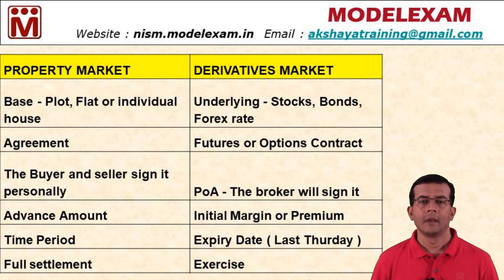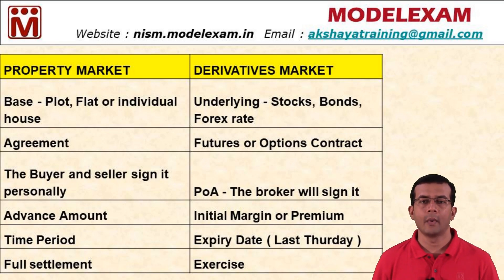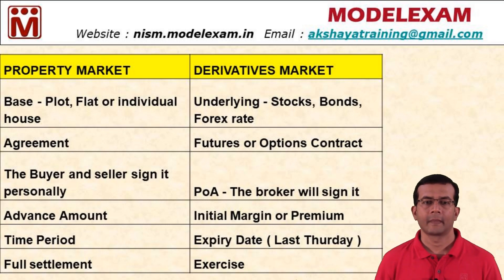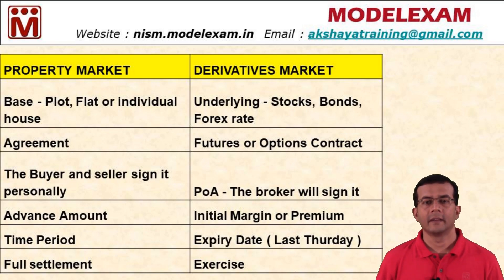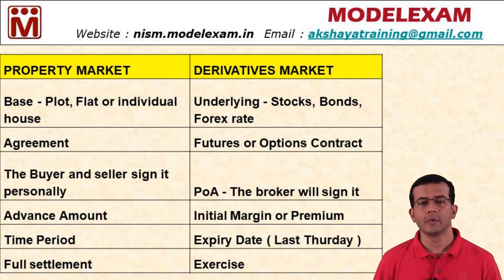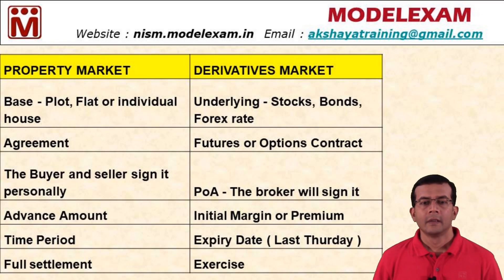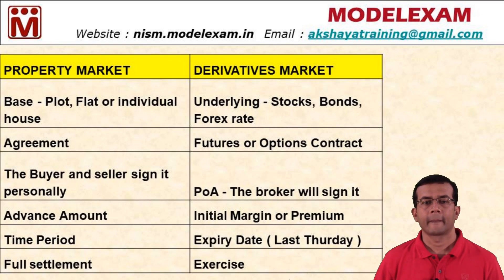The second row: under the property market we have an agreement — whenever you buy a plot or flat you enter into an agreement. Under the derivatives market, we enter into something called a futures or options contract. These futures and options contracts are traded in stock exchanges.